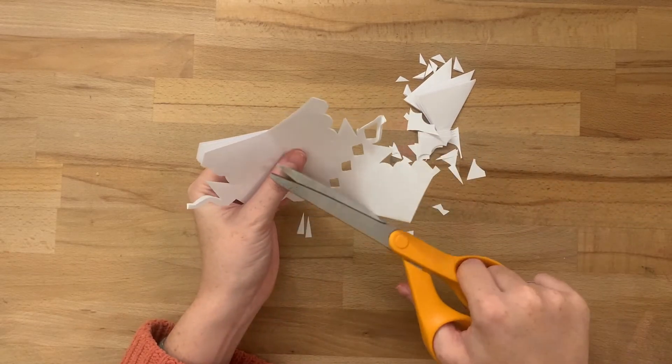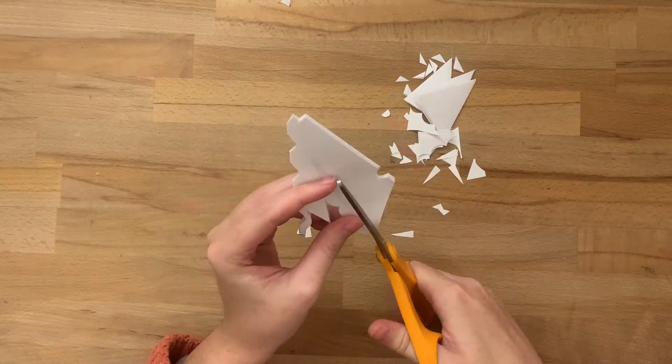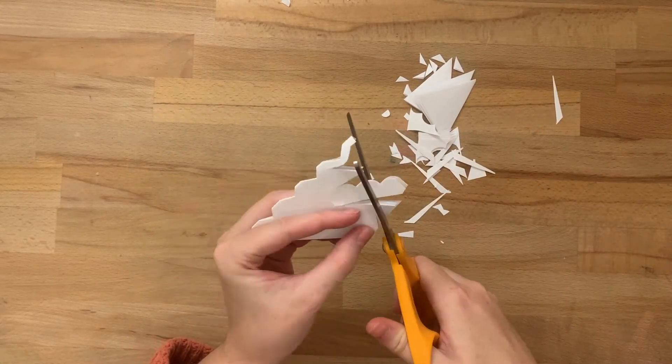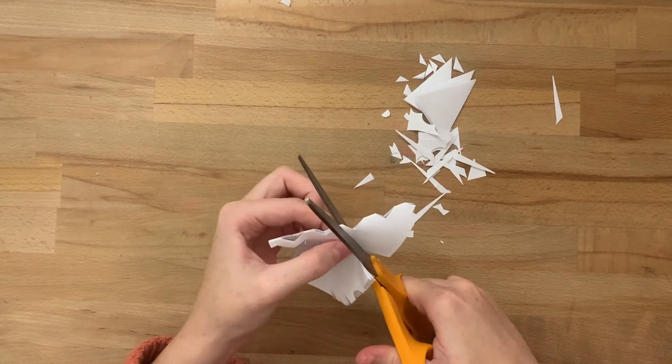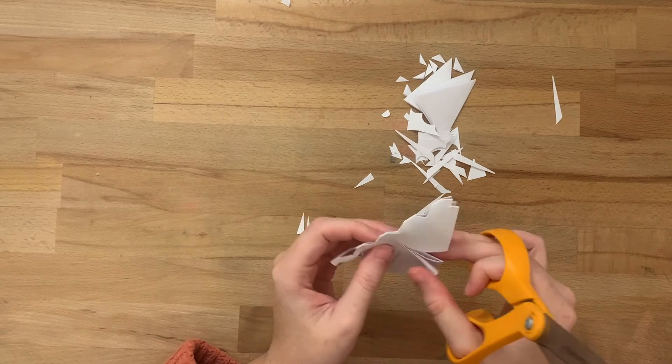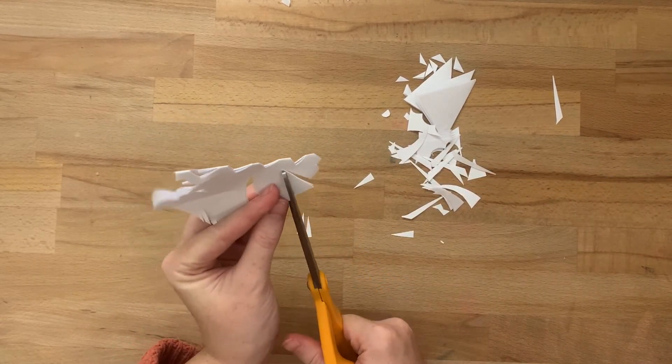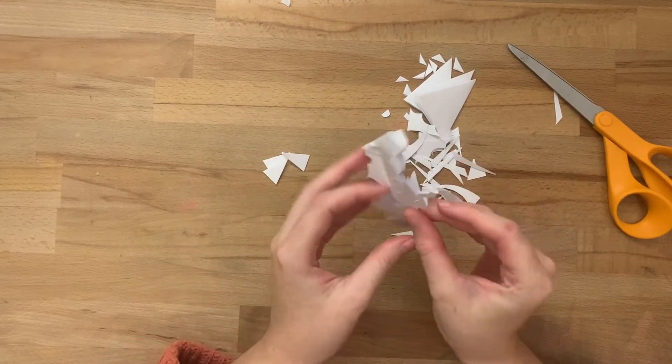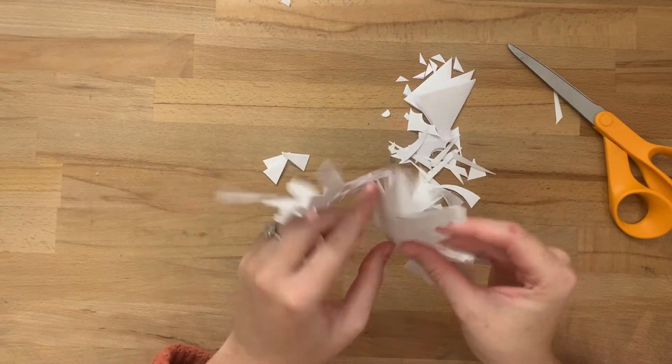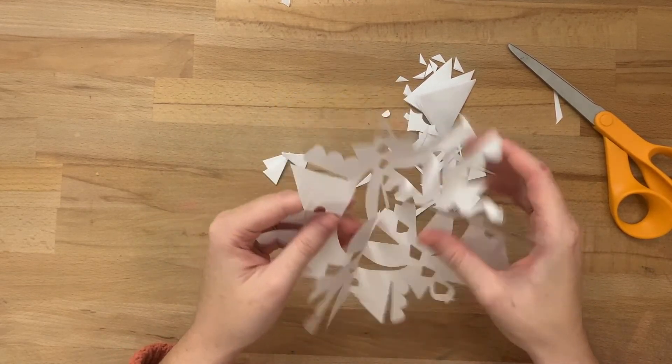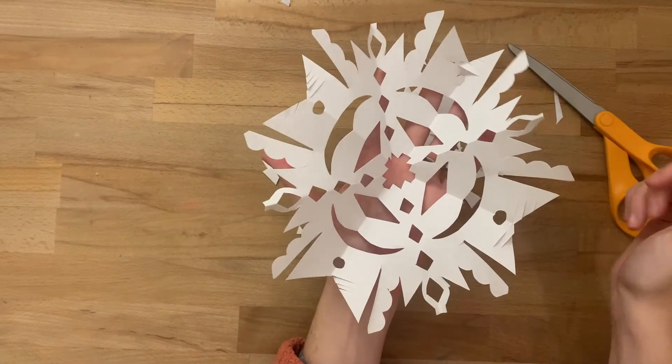Be like, oh I think I want to do something right there. Try to use different kinds of shapes. The more different kinds of shapes, the more interesting it will look. All right, I'm pretty happy with this, so I'm going to go ahead and open it up and see what I have. It's always a surprise. Happy snowflake making!